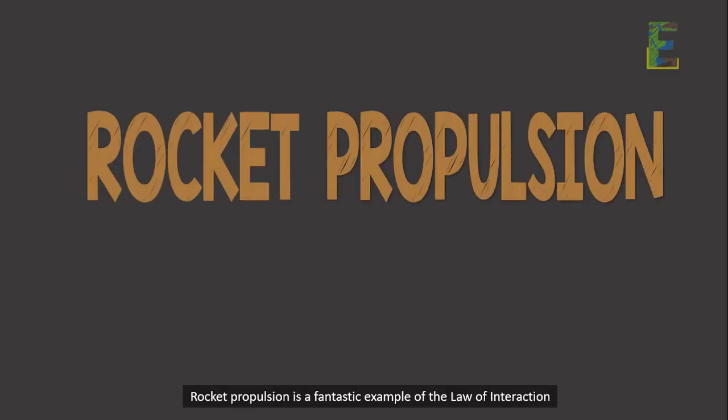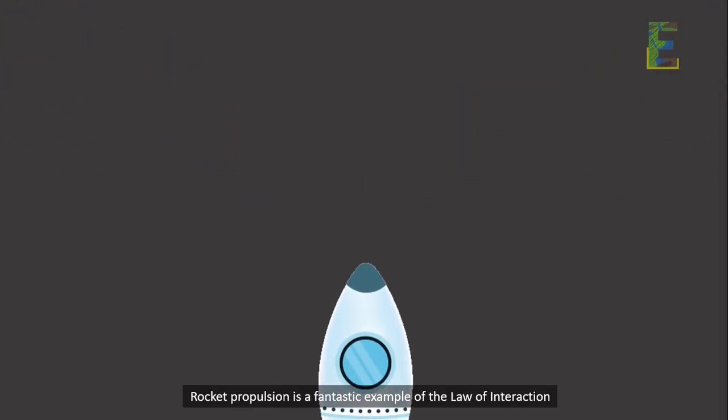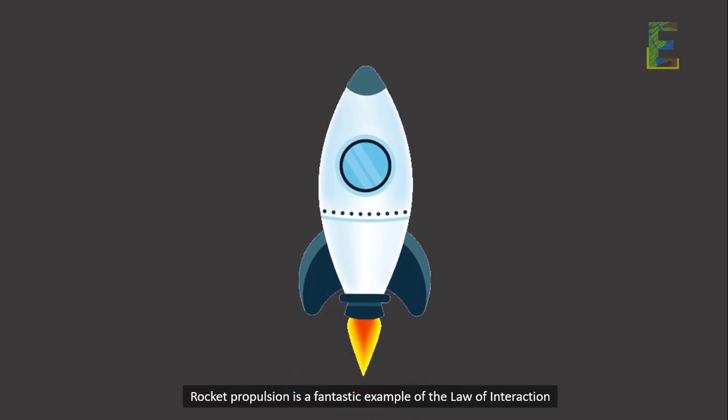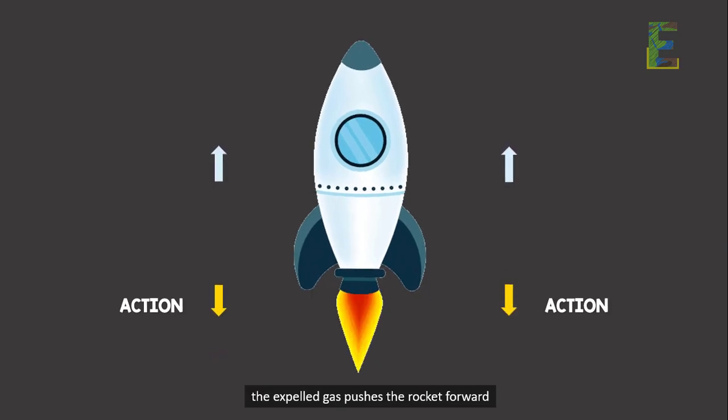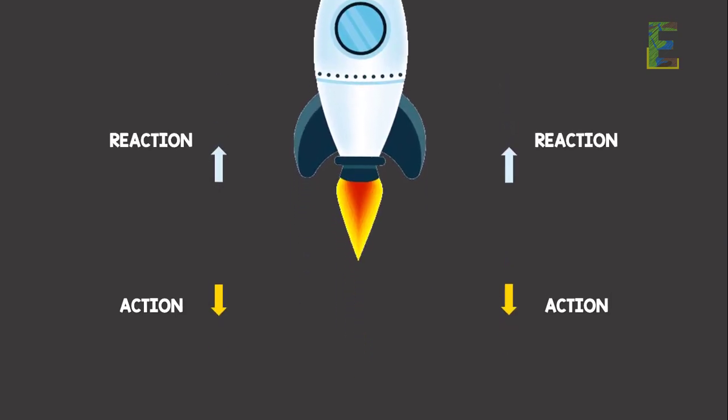Rocket propulsion. Rocket propulsion is a fantastic example of the law of interaction. As a rocket expels gas out of its engines - action - the expelled gas pushes the rocket forward - reaction.